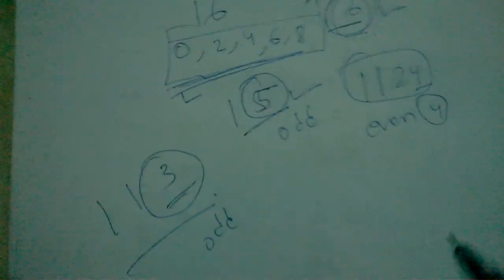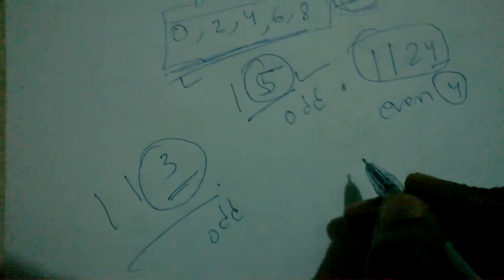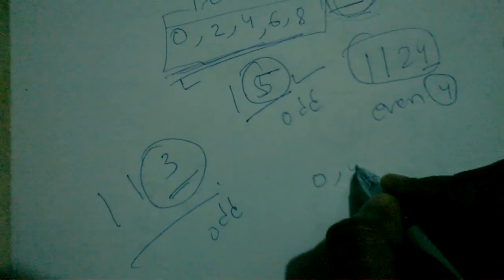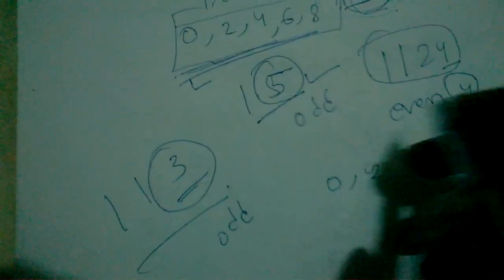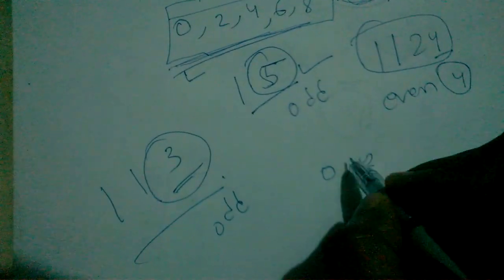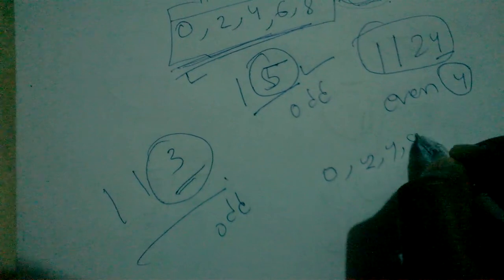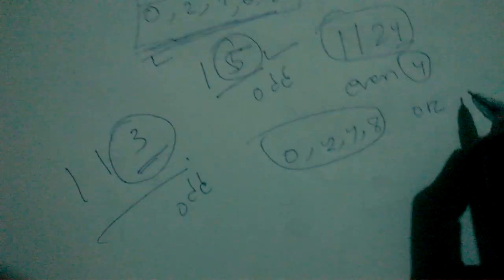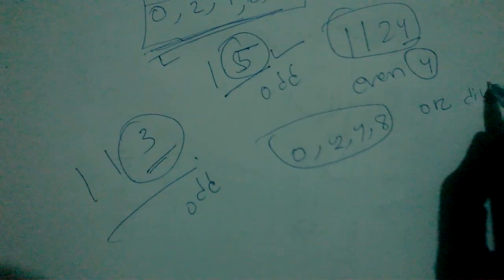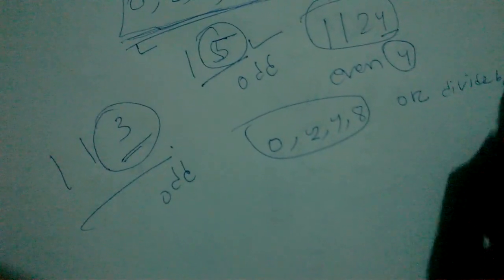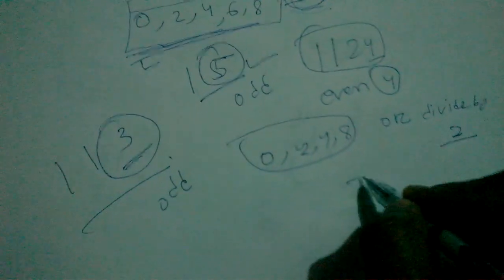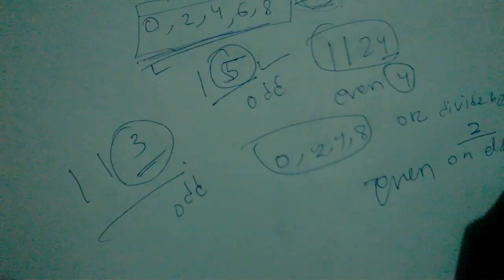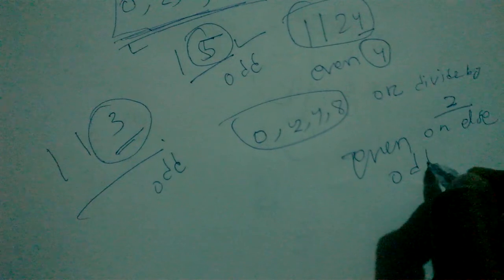So the main thing is: if the rightmost digit of a number is 0, 2, 4, 6, or 8, or the rightmost digit is divided by 2, then that number is even. Otherwise, that number is odd.